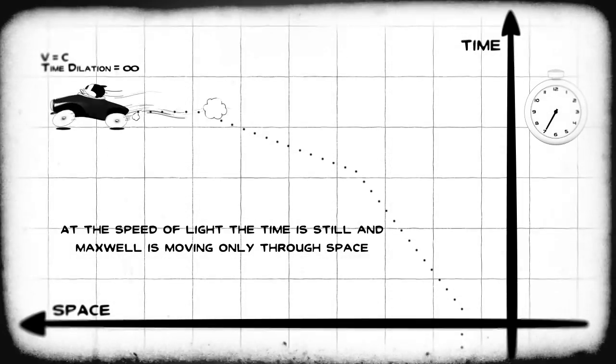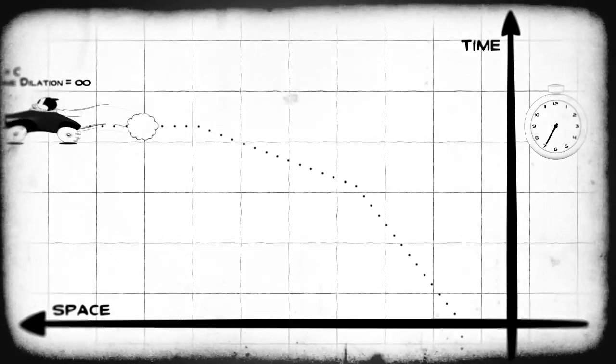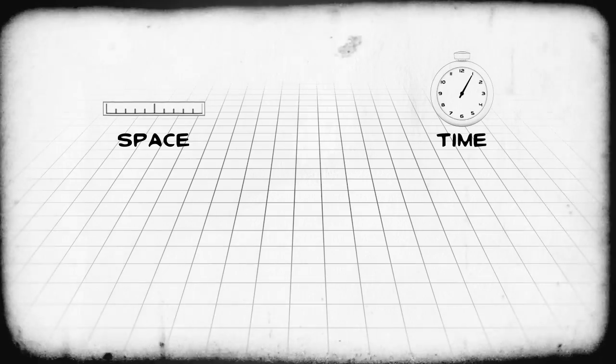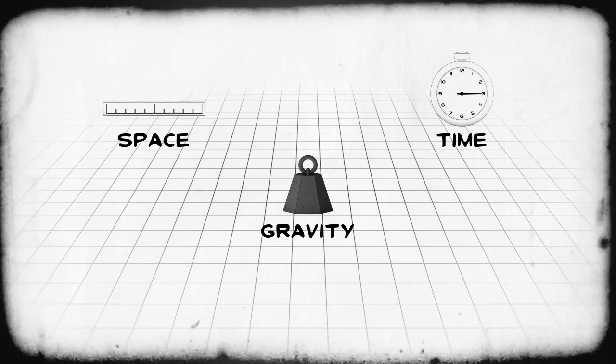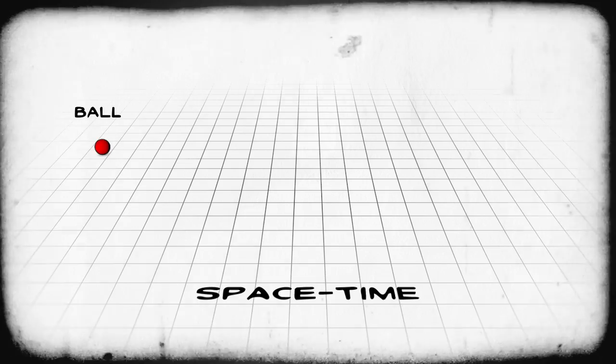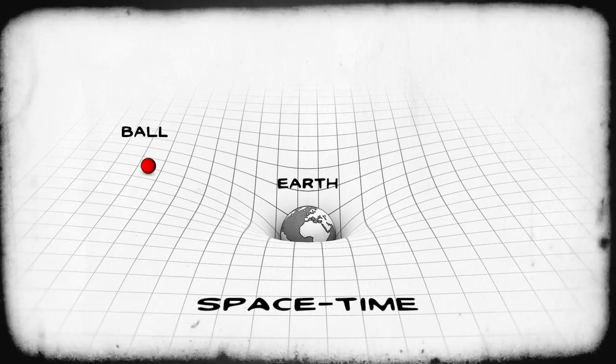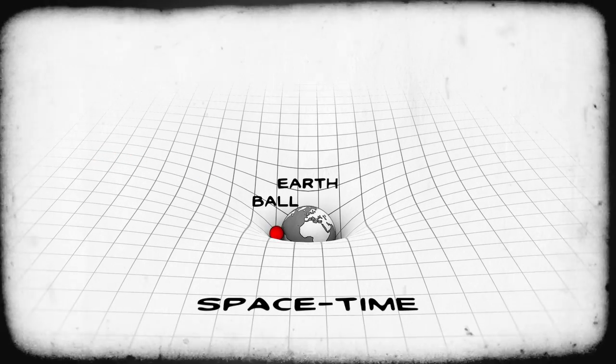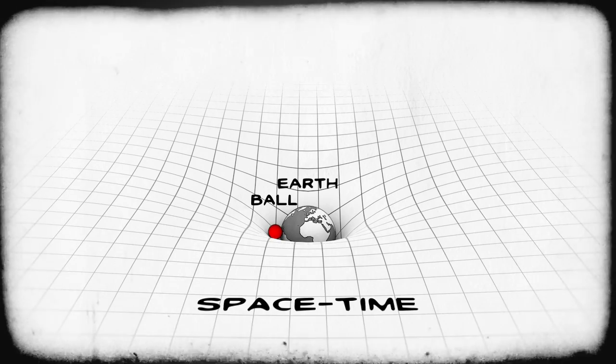Special relativity explains how speed affects time and space. General relativity includes gravity and redefines it as a warping of spacetime. A massive object creates a depression in the fabric of spacetime. Smaller objects will tend to roll down into the depression.